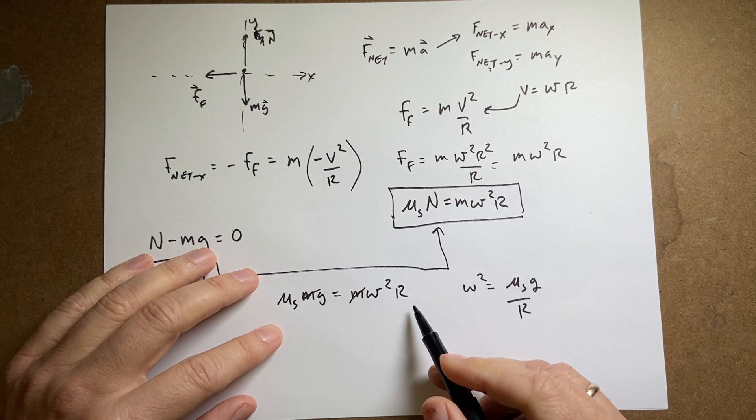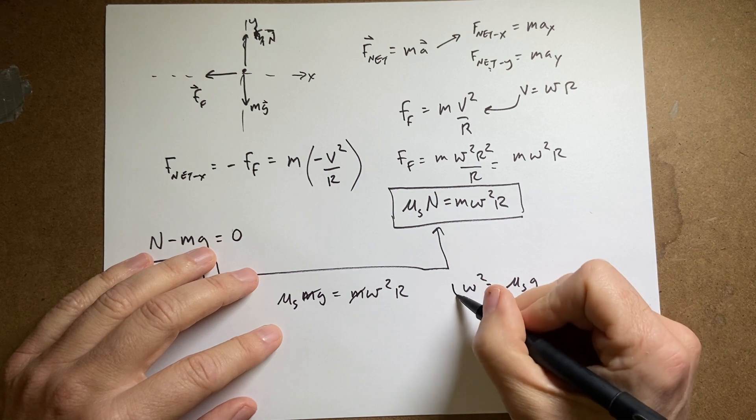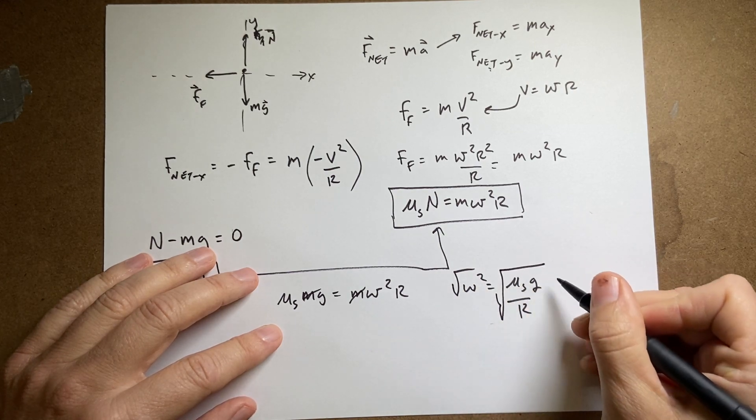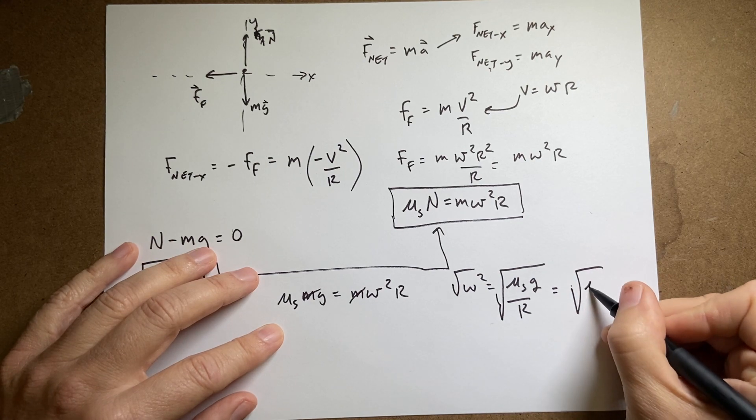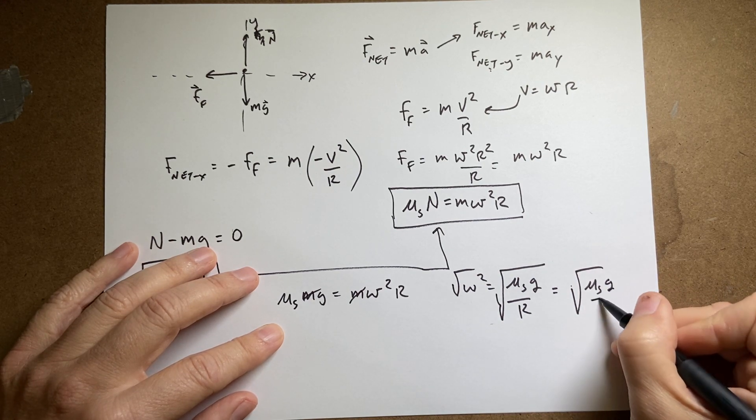And I get omega squared equals mu s g over r. And then I can take the square root of both sides.